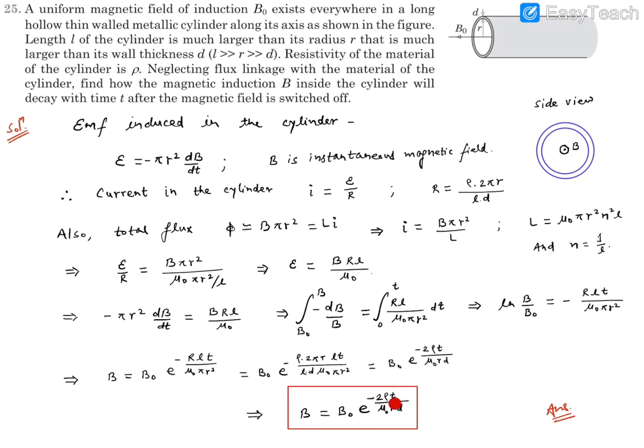So this is the expression of magnetic field at any instant t after this magnetic field was switched off. This will decay from B₀ value to 0 in exponential fashion. This is the complete expression for the magnetic field which the equation was demanding. That's our final response. Thank you.